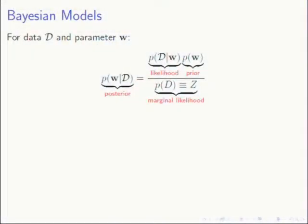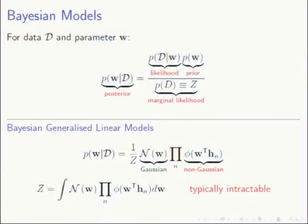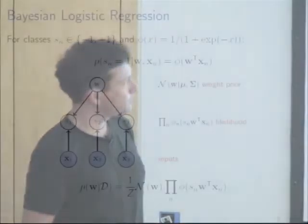The usual story is the posterior distribution of some weights W given some data D, typically in the form of some likelihood term times a prior term. The marginal likelihood is in the denominator, which I'll also call Z. What I mean by a linear model is that the posterior distribution has a Gaussian term and a product over site N of some non-Gaussian term. Linearity refers to this projection for some constant vectors H.